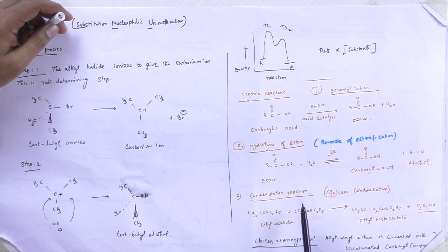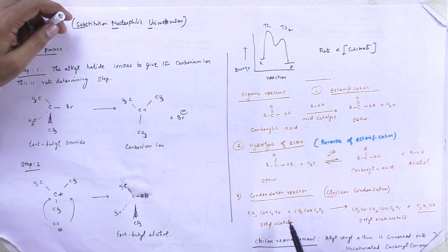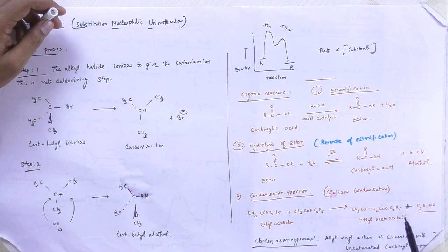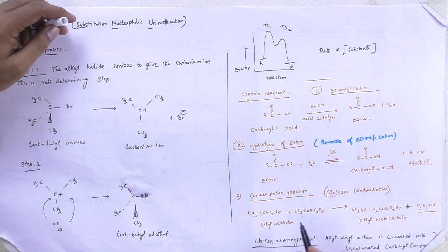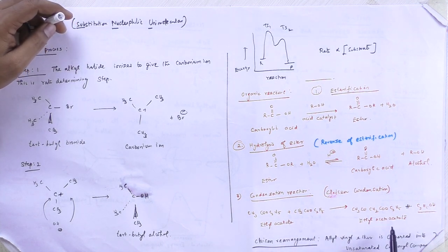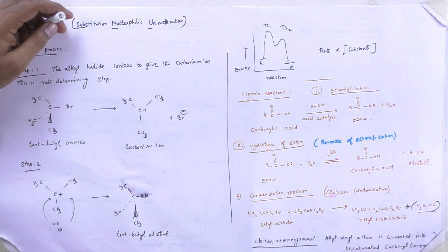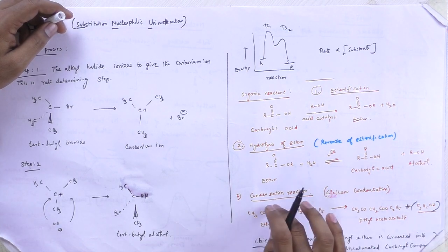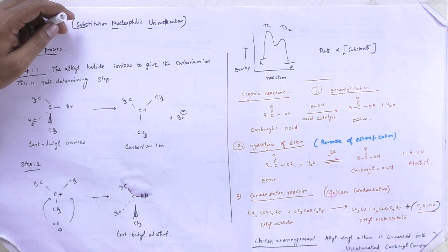The third reaction is condensation reaction, with glycine condensation as the example. Two ethyl acetate molecules react together to form a product, and ethanol is simultaneously removed. In a condensation reaction, two molecules combine to form a new product with simultaneous removal of water or ethanol.